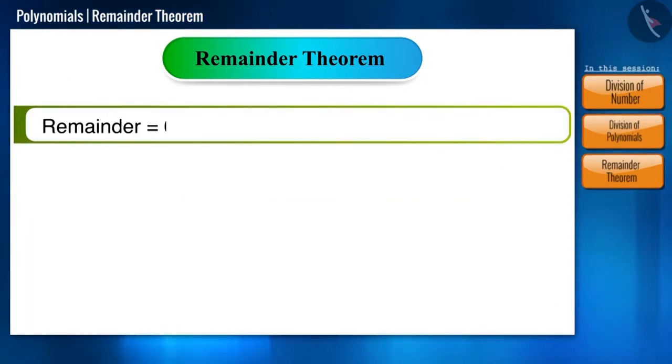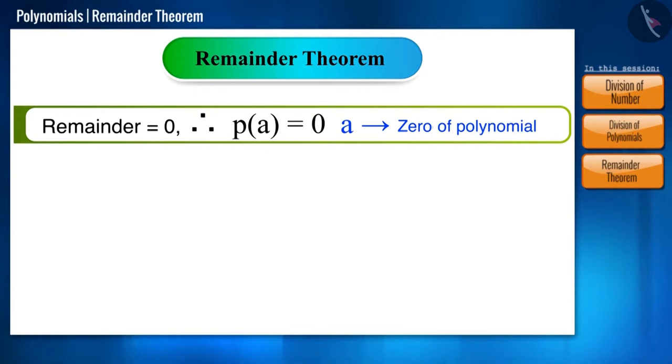And if the remainder is found to be 0, then p of a equals 0. And in such situations, a is the zero of the polynomial.